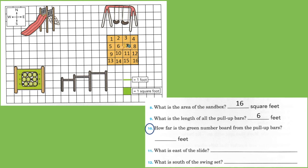Number ten. How far is the green number board from the pull-up bars? One, two. Two feet. Good.